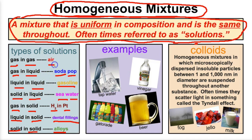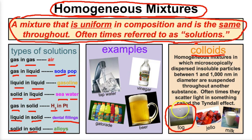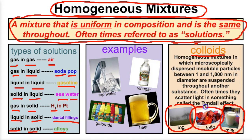One type of homogeneous mixture is called a colloid. A colloid is a homogeneous mixture in which microscopically dispersed insoluble particles between one and one thousand nanometers are suspended throughout another substance. For example, fog is a colloid — tiny microscopic water droplets suspended in air. Milk is a colloid — tiny microscopic particles of fat dissolved in the milk substance. And Jello is another example of a colloid.